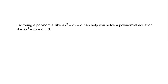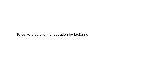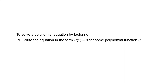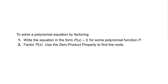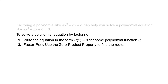Factoring a polynomial like ax squared plus bx plus c can help you solve a polynomial equation like ax squared plus bx plus c equals zero. To solve a polynomial equation by factoring: one, write the equation in the form p of x equals zero for some polynomial function p, and two, factor p of x. Use the zero product property to find the roots.